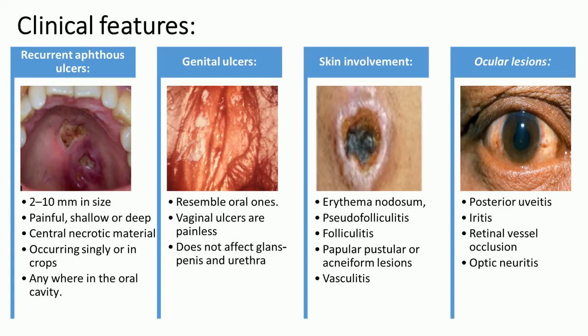Genital ulcers resemble oral ones. Vaginal ulcers are painless. Genital ulcers do not affect the glans penis and urethra. Skin involvement is in the form of erythema nodosum, pseudofolliculitis or folliculitis, papular pustular or acneiform lesions, and vasculitis.